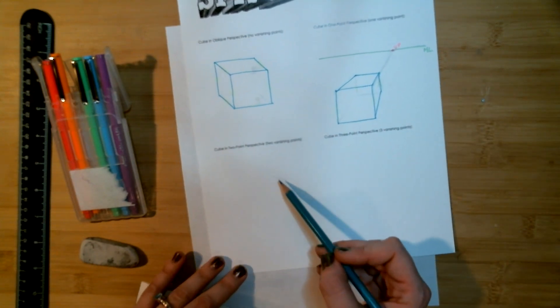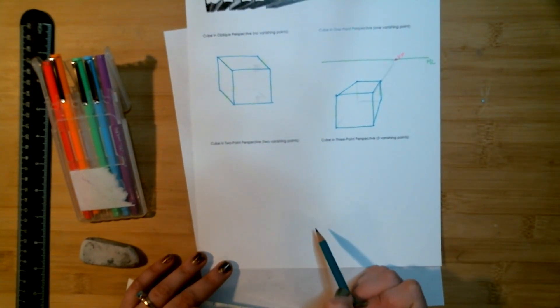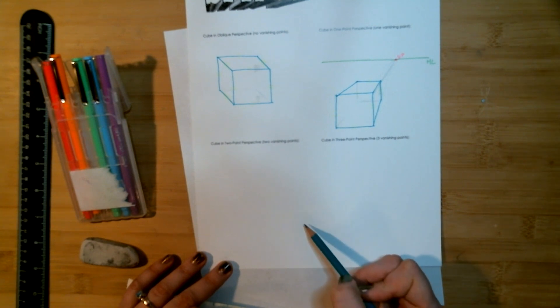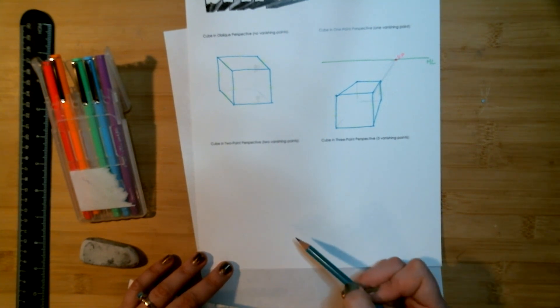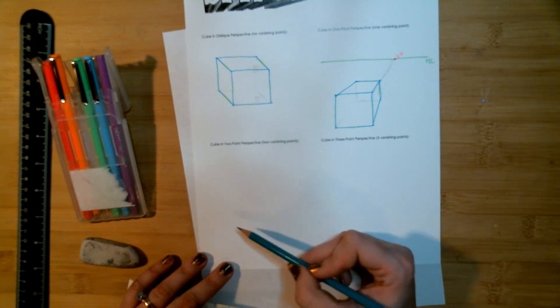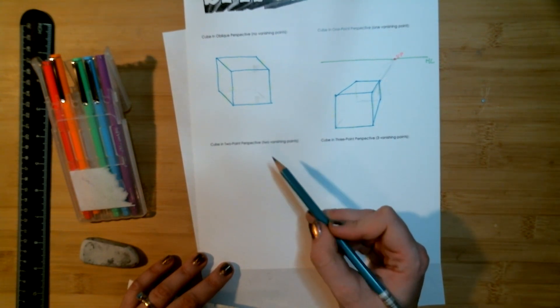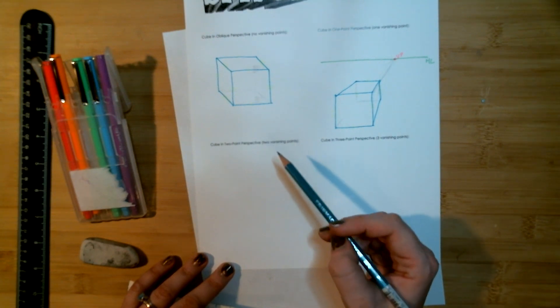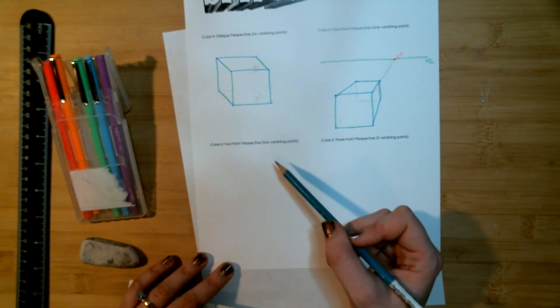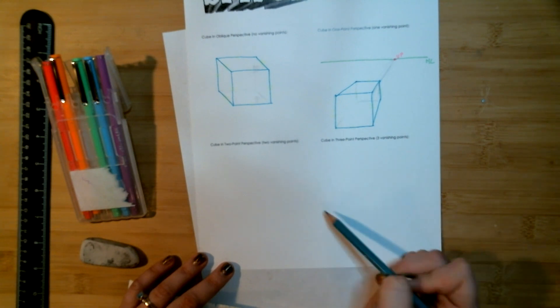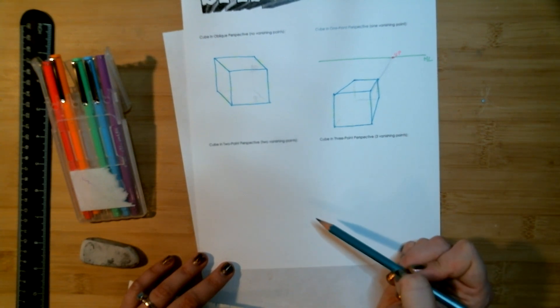This time again we'll draw a horizon line and a vanishing point but this time we're going to have two vanishing points. I'm going to put one on either end and this time we'll be going above our horizon line so we're looking from the bottom towards our box which will now only have one series of parallel lines that will be its vertical lines. All other lines will converge toward those vanishing points.